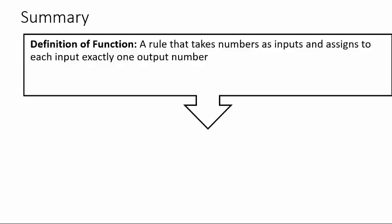All right, let's summarize everything we have so far then. What have we learned so far in section 1.1? Definition of a function: a rule that takes in a number as an input, assigns it to exactly one output. Every input gets one output.